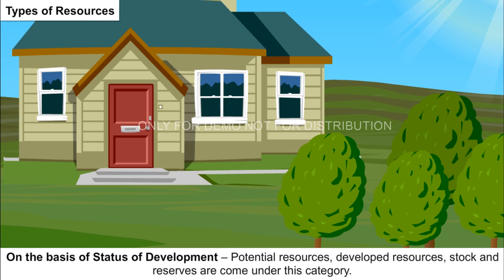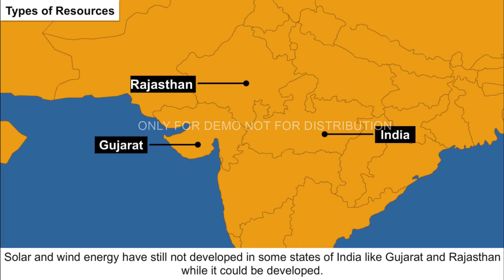On the basis of status of development, potential resources, developed resources, stock, and reserves come under this category. Potential resources are present in a region but haven't been utilized by the people of that region — for example, solar and wind energy in states like Gujarat and Rajasthan. After completing surveys, the quality and quantity of developed resources are determined for use; India has many million tons of coal resources as an example.